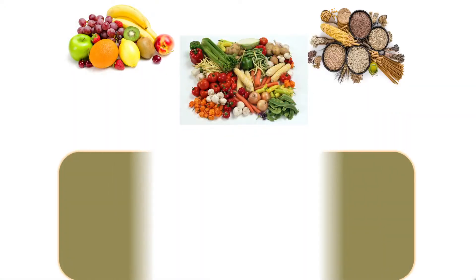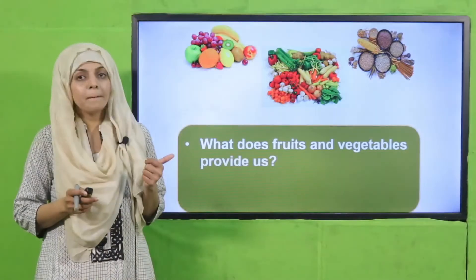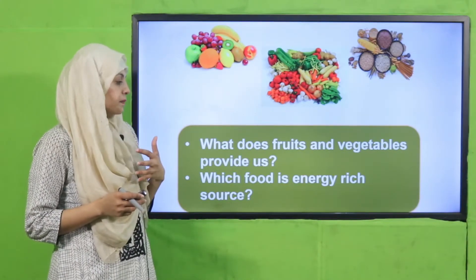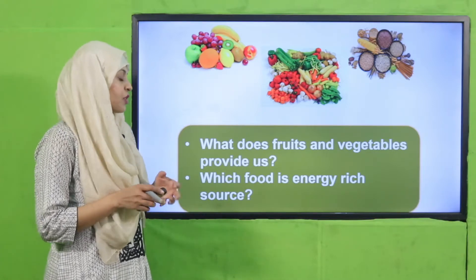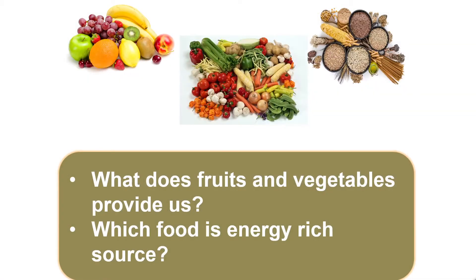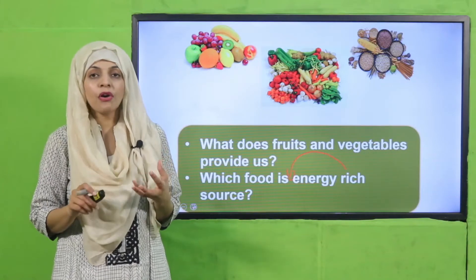My dear students, let's quickly recap what we did in the previous lecture. These are fruits and vegetables and grains. Quickly tell me what does fruits and vegetables provide us? Vitamins and minerals — very good. Which food is rich in energy? It is grains, which have carbohydrates in them and they are a rich source of energy.